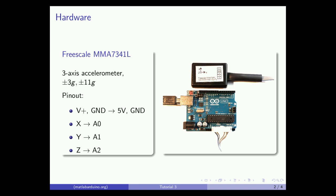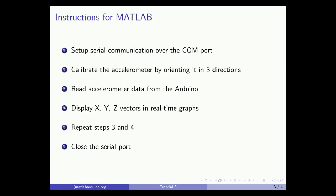We will be using the same hardware setup from the second tutorial. To summarize, there are five steps to follow in MATLAB. First, set up serial communication over the COM port. Calibrate the accelerometer to normalize readings in units of 1g. Read the accelerometer data from the Arduino. Visualize the data for each axis in real time. Repeat steps 3 and 4. Then when finished, safely close the serial port.